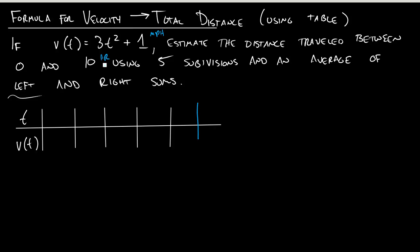And in this section, they'll be giving us some fancy words like subdivisions and average of left and right sums. And so this problem is mostly about what to do with kind of those things. So if it says 5 subdivisions, that can kind of cue you in.